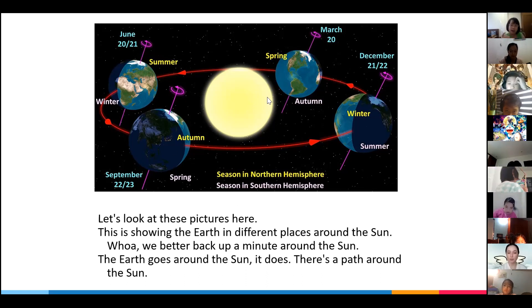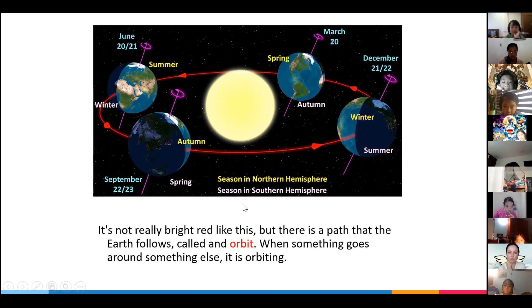So our planet rotates every day—that's why we have morning and night. It rotates around the Sun, so it's moving, and there is a path around the Sun. What is this path called? Let's see, anybody know what is this path called? Dukming, what is the path that our planet Earth follows?